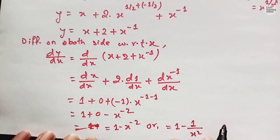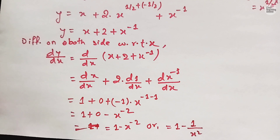The final answer is 1 minus x to the power minus 2, or you can write it as 1 minus 1 upon x squared using the law of indices. I hope you enjoyed today's lecture — see you in the next video. If you are enjoying the content on Civil Learning Online YouTube channel, do like this video and share it with your friends. Have a good day!